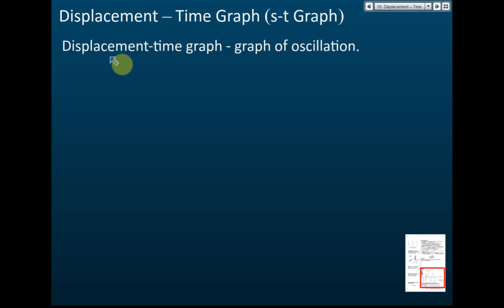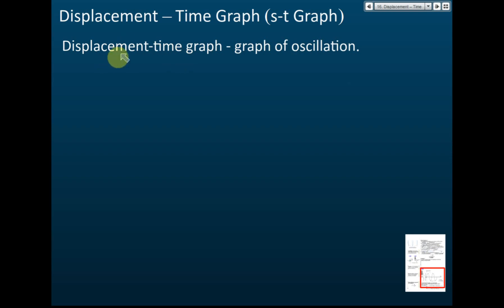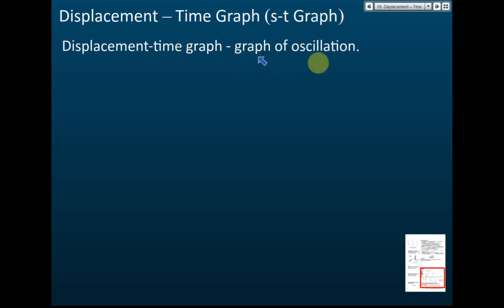The displacement-time graph is the graph of oscillations. In these chapters, we have two very similar graphs: the displacement-time graph and the displacement-distance graph. The displacement-time graph is the graph of oscillation, and the displacement-distance graph is the graph of a wave. We will discuss the displacement-distance graph later. It is very important to know that the displacement-time graph is the graph of oscillations.